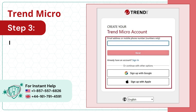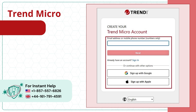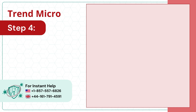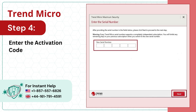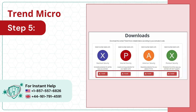Step 3: If you already have an account, sign in, or create an account following the prompts. Step 4: Enter the Activation Code and click Next. Step 5: Choose a Relevant Installer and click Install.